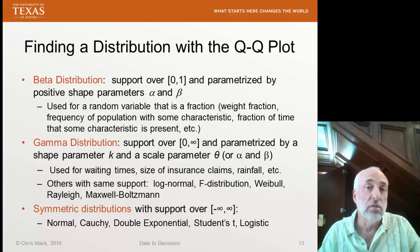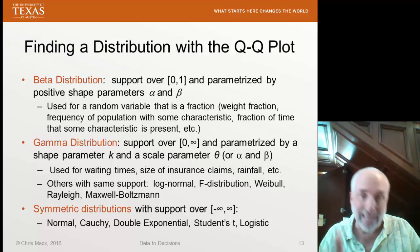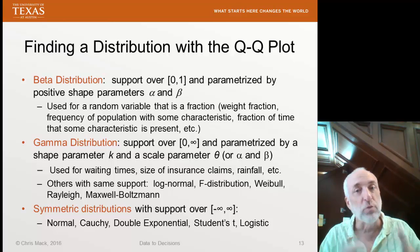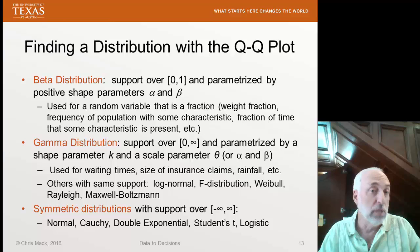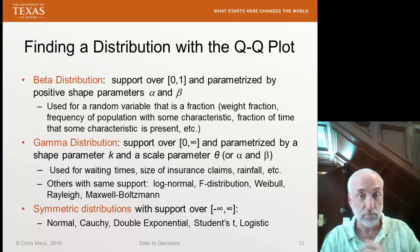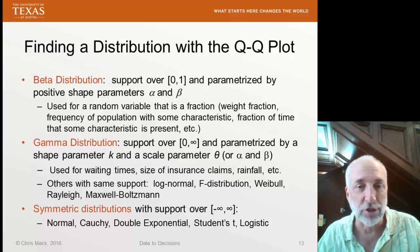A beta distribution has support from zero to one, but of course you can scale it and shift it so that it goes from any starting value to any ending value. And you have these two parameters, alpha and beta. You can adjust to make it symmetric, skewed left, skewed right, over that range.